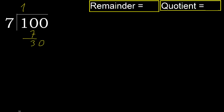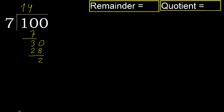Next, bring down: 30. 7 multiplied by 5 is greater. Multiplied by 4: 28 is not greater. Subtract. Next — no more digits, therefore finish.